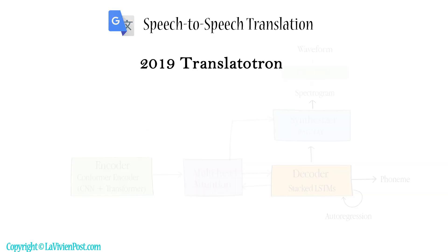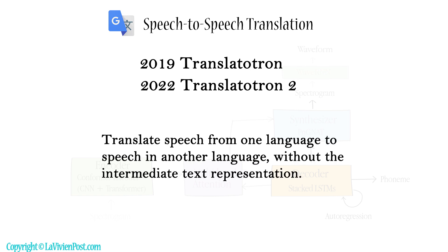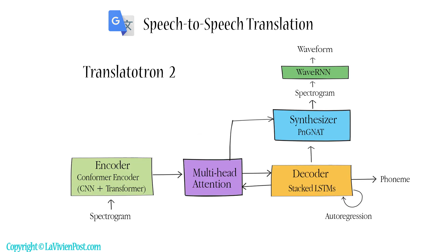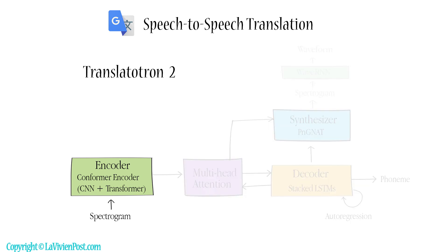In 2019 and 2022, Google introduced direct speech-to-speech translation systems Translatotron and Translatotron 2, respectively. Both could translate speech from one language to speech in another without intermediate text representation, and were also able to retain the source speaker's voice. Translatotron 2 approached the performance of the cascaded system. In this model, the encoder contains a speech-recognition system called the conformer.